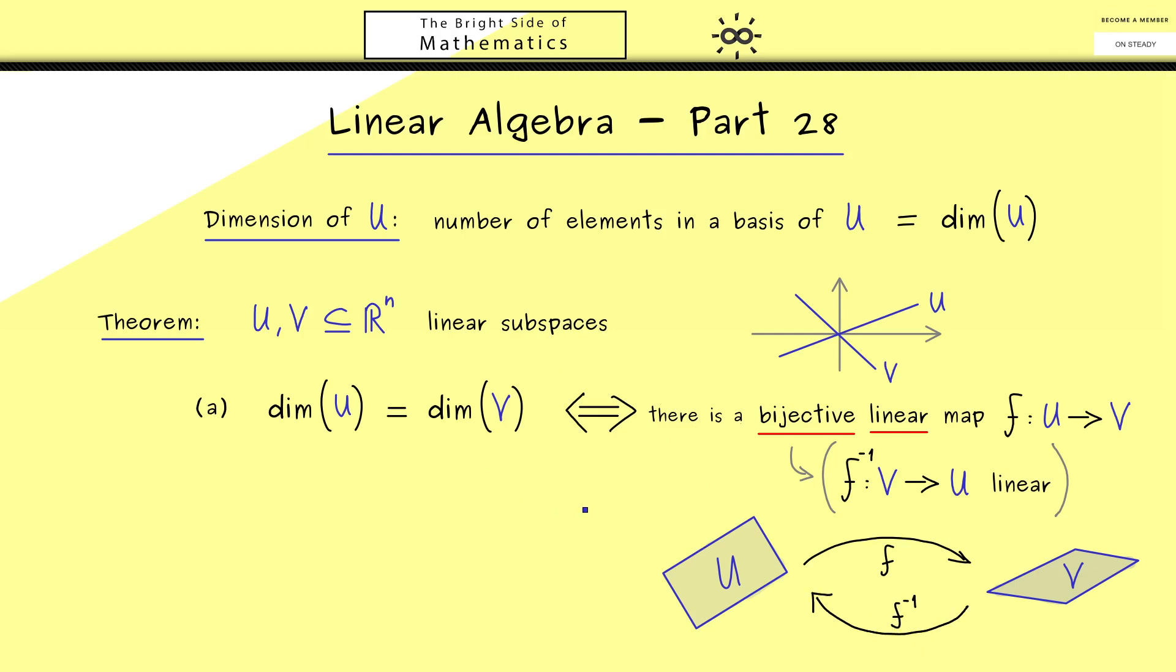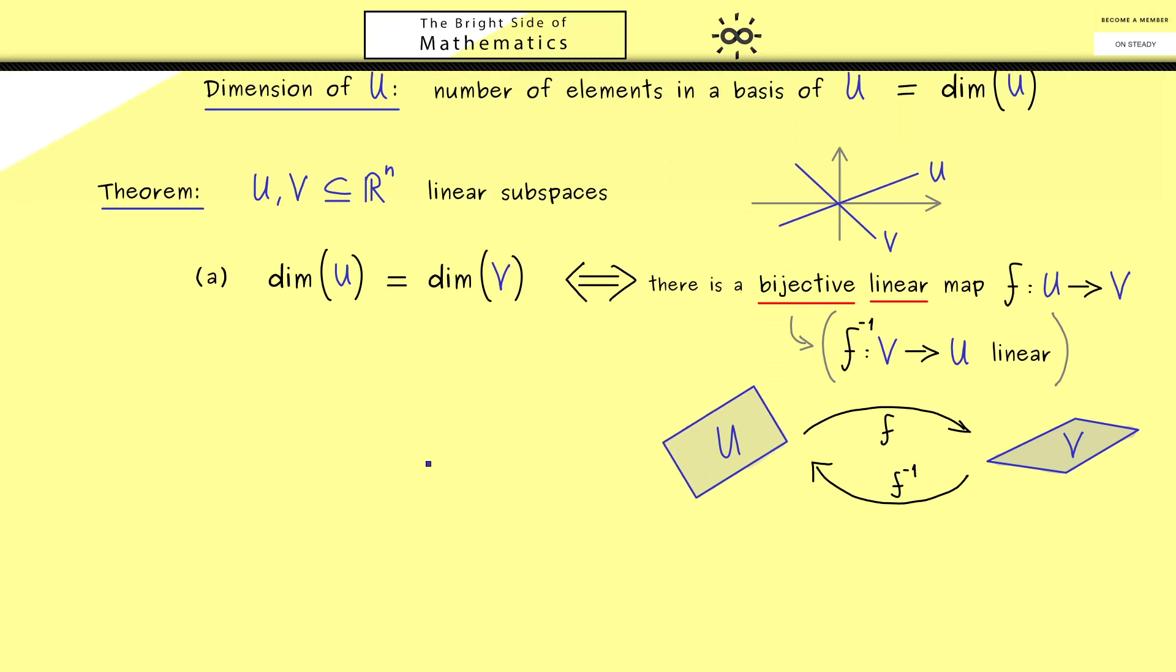So now from this equivalence we can immediately conclude another important implication. And this is now what we formulate with point B. Now assume here that the one subspace U is a subset of the other one. So indeed not like in this picture in R^2 before. However in the same way as before we also want to include that both dimensions coincide. Hence it means part A is applicable which means we find such a bijective linear map. And therefore there is no other possibility that U and V are actually the same subspace. Or to say it in other words if you want a proper subset you need less in the dimension. Ok so now we have both facts here and I would say they are very important so please remember them for the future.